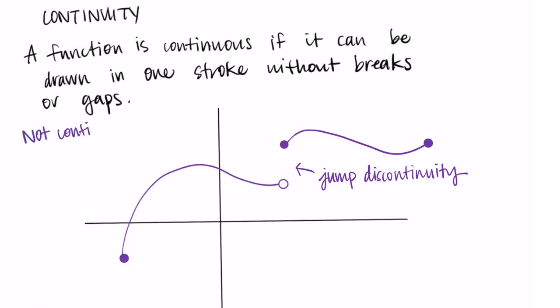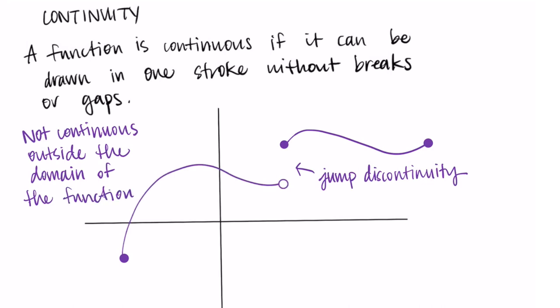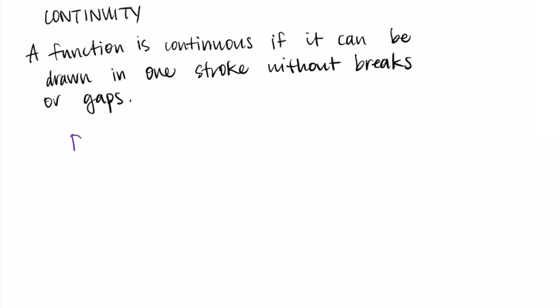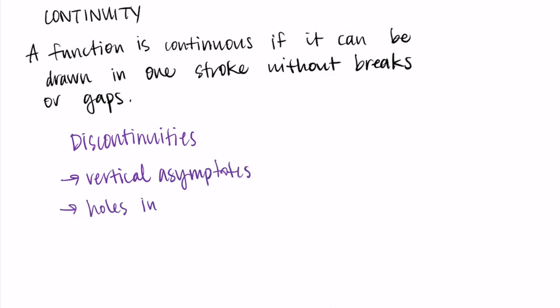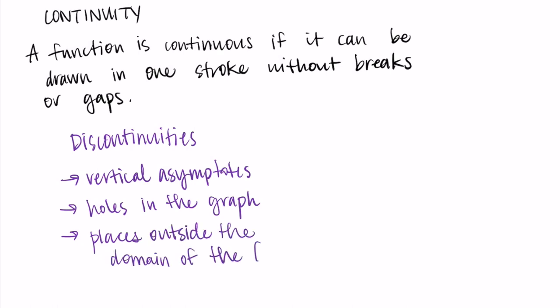It's also worth noting that a function is only continuous on its domain. So if we have endpoints on the function and we look outside of those endpoints, the function isn't continuous there. To summarize, we have three ways that a function has discontinuities: first is at vertical asymptotes, second is at holes in the graph, and third is if we are outside the domain of the function.